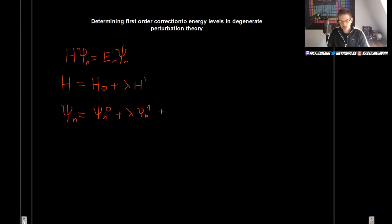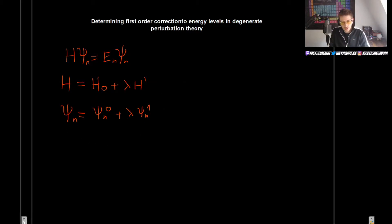Previously we went to second order because we wanted to find the second-order corrections, but for now we will be limiting ourselves to the first-order correction in perturbation theory, so there is really no point in expanding any further. The energy levels are going to be the unperturbed energy levels plus the first-order correction.